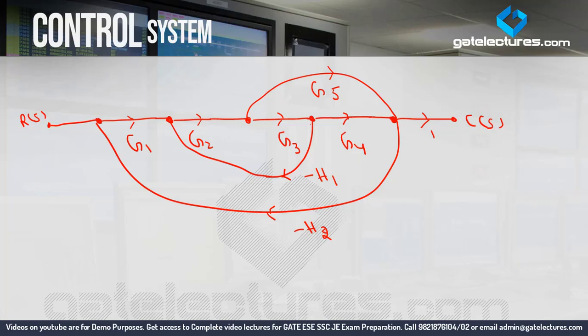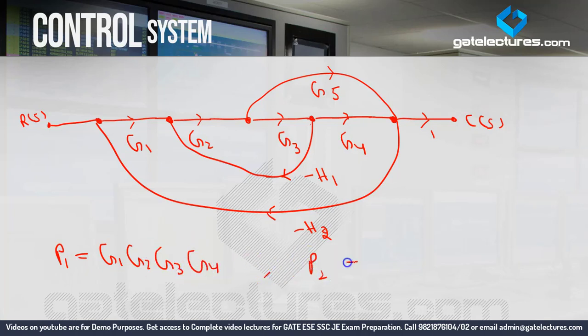Now through this signal flow graph, we can generate the transfer function. For transfer function, we need to calculate forward path gains and loop gains. Looking at forward paths: the first forward path directly visible is G1, G2, G3, G4 — so P1 = G1·G2·G3·G4. Is there another forward path? Yes — G1, G2, and via G5, you can reach C(s) again. So P2 = G1·G2·G5. These are the two forward paths.